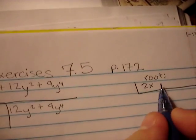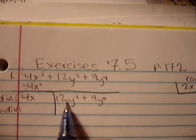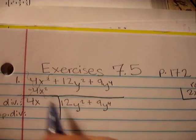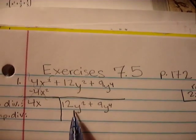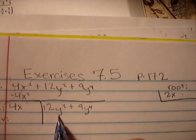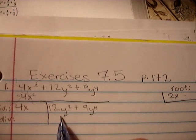And our next term that we're looking to find is going to be found by taking our trial divisor and putting it under the first remainder. Not this one. That one's out of the picture. But the first remainder.